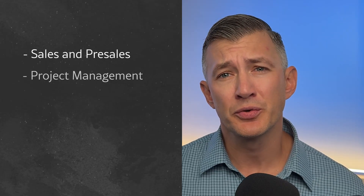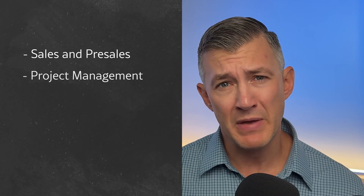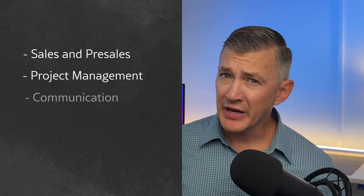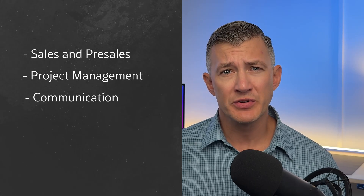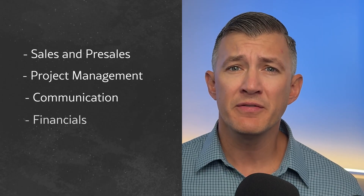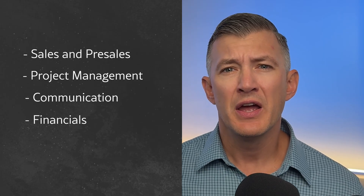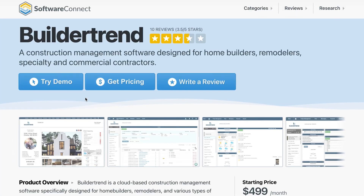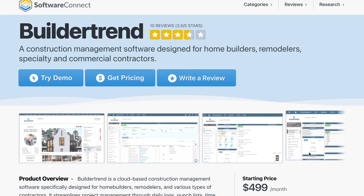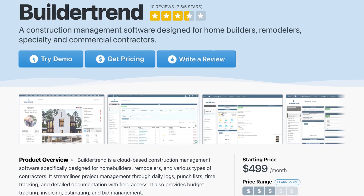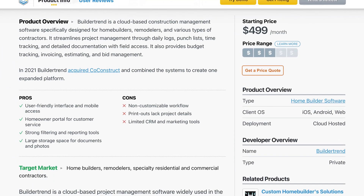Those five areas are: sales and pre-sales (think customer management and estimating), project management for scheduling jobs and task management, communication for streamlining both client and subcontractor conversations, financials for tracking finances, and their newest offering, materials management. Buildertrend also recently acquired its competitor, Co-Construct, and has started to integrate some of its features into its product.